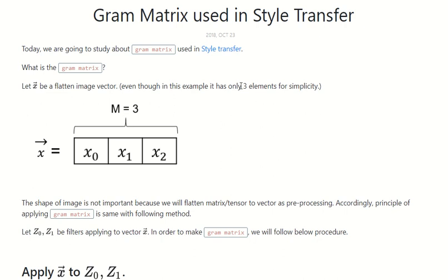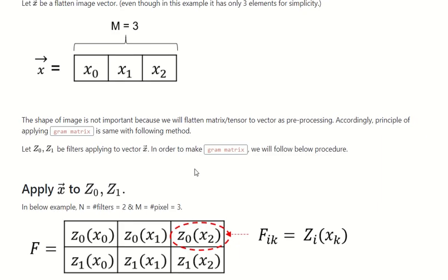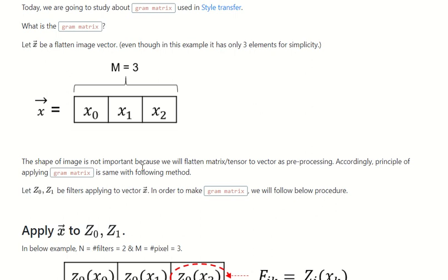it has only three elements for simplicity. The shape of the image is not important because we will flatten the matrix or tensor to a vector as preprocessing. Accordingly, the principle of applying the Gram matrix is the same with the following method.